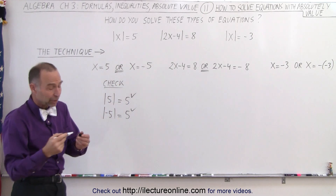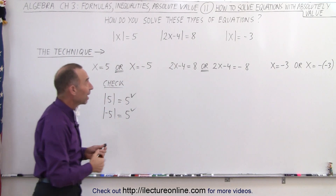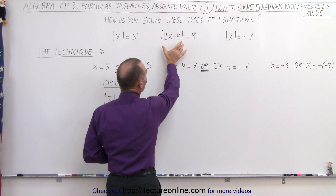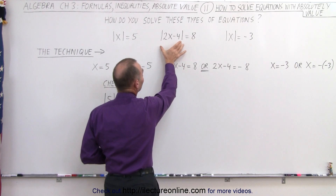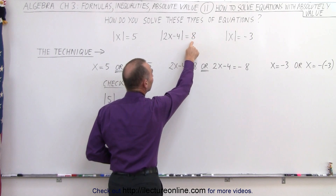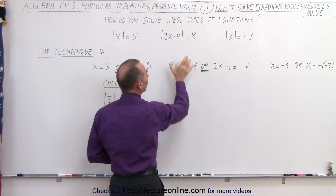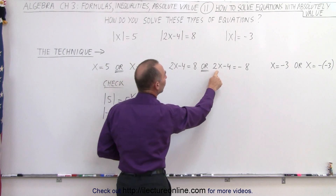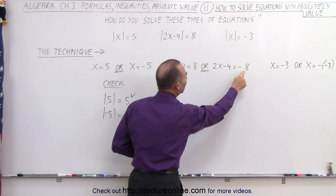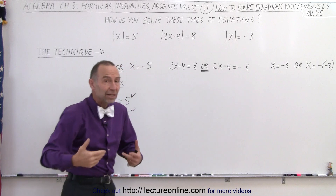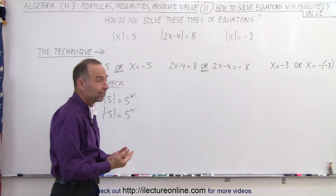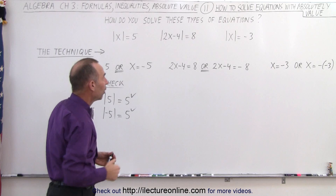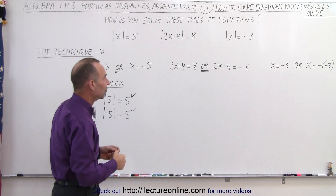So essentially, that becomes the technique. For example, if we have an equation that looks like this, we're going to set what's inside the absolute value signs equal to the positive and the negative value of the item on the right. So we set 2x minus 4 equal to positive 8, or 2x minus 4 equal to negative 8. Then we'll solve each of those equations for x, and those become the two possible solutions.